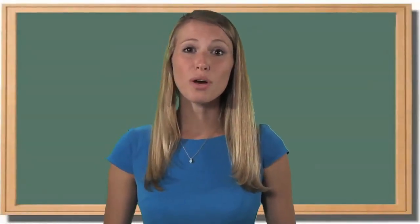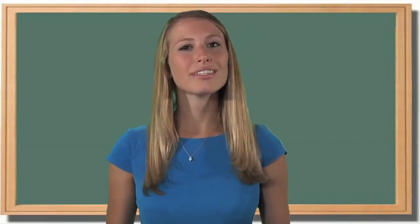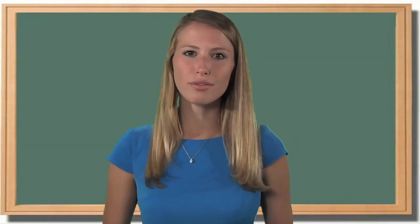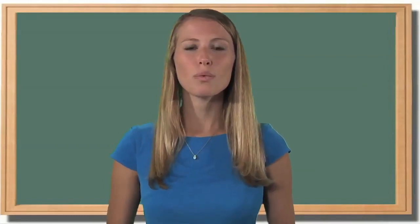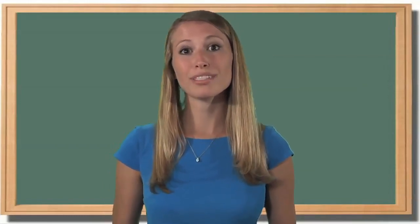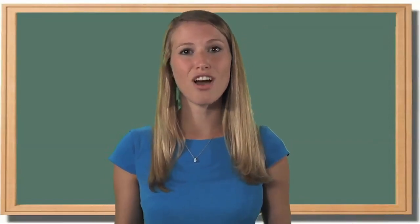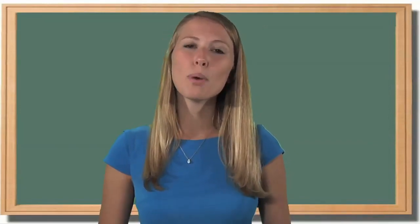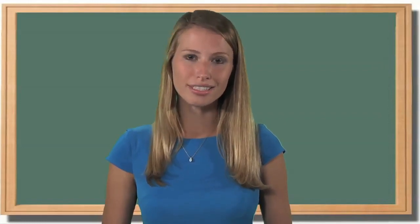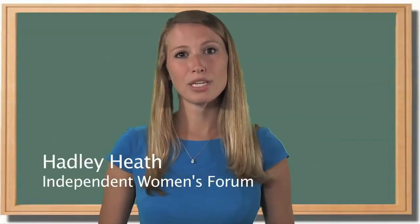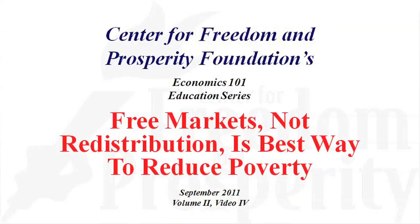Although the United States is one of the wealthiest countries in the world, there are still many people living in poverty. People on the left generally argue that government should help these people with so-called means-tested programs, such as entitlements, that redistribute wealth from the haves to the have-nots. And they claim that people who oppose such policies are heartless and uncompassionate toward the poor. My name is Hadley Heath from the Independent Women's Forum, and I'm narrating this Economics 101 video for the Center for Freedom and Prosperity to explain the alternative view.